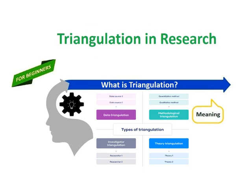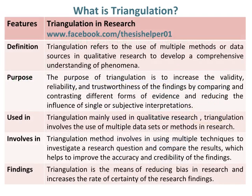Triangulation in research. What is triangulation? Triangulation refers to the use of multiple methods or data sources in qualitative research to develop a comprehensive understanding of phenomena. The purpose of triangulation is to increase the validity, reliability, and trustworthiness of the findings by comparing and contrasting different forms of evidence and reducing the influence of single or subjective interpretations.